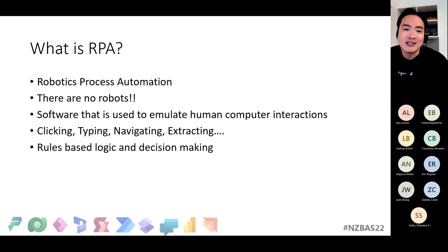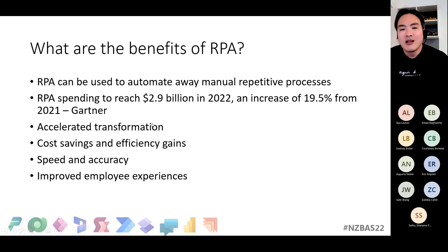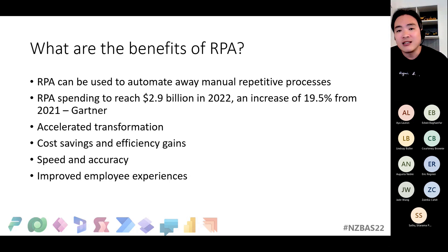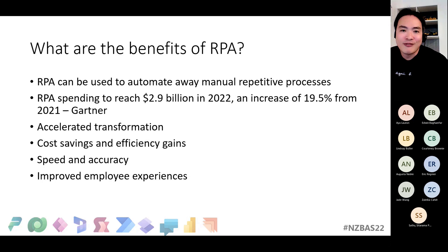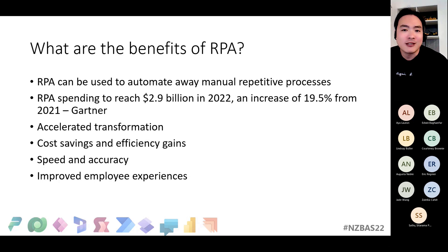Why should you learn RPA and Power Automate Desktop? Firstly, digital transformation. In the last three to four years, especially during the pandemic, organizations had to accelerate digital transformation within weeks and months rather than years. They often have processes spanning many different systems and applications — a lot of them legacy applications with no APIs available. RPA is well-suited to connect these systems, as it can interact with them just like a person would — through the keyboard and mouse — rather than through an API layer.